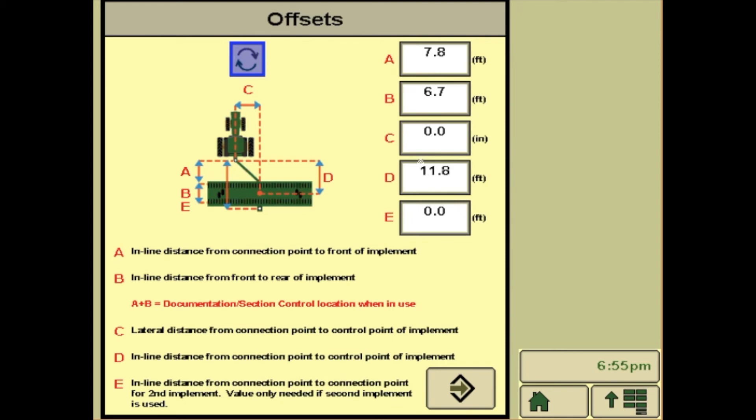If you are using a 1790 or 1795 planter, you may have letter C entered in as an offset of 7.5 inches if you have a 32 row planter. Once you have them entered in, hit Accept.